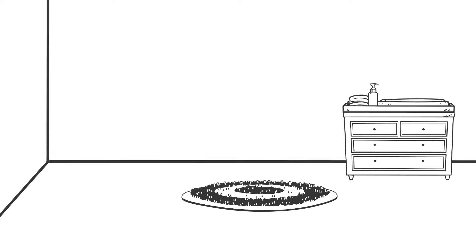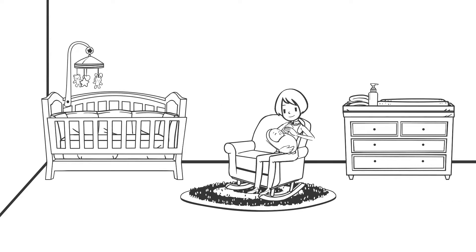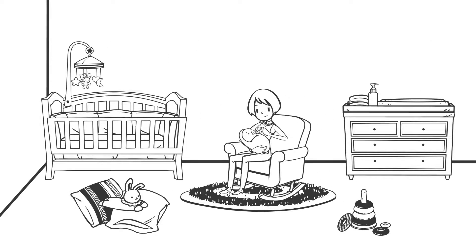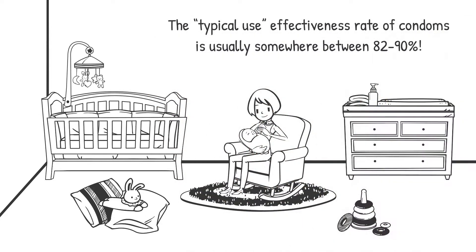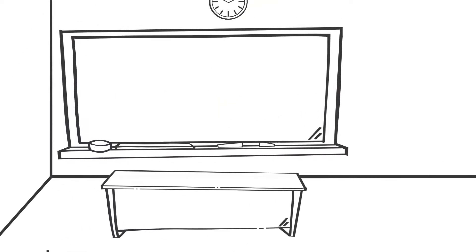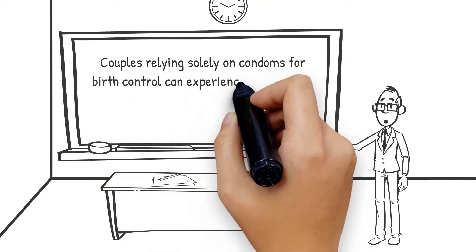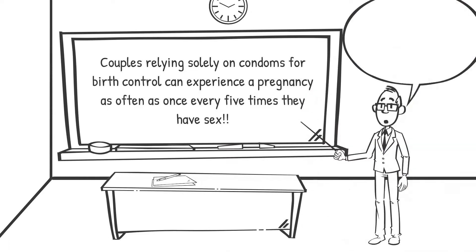The overall effectiveness of male condoms can vary greatly. With perfect use, the effectiveness rate can be as high as 98%. The typical use effectiveness rate is usually somewhere between 82 and 90%, though. This means that couples relying solely on condoms for birth control can experience a pregnancy as often as once every five times they have sex.